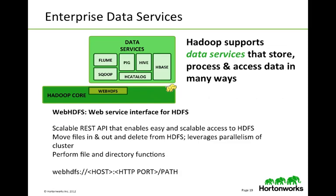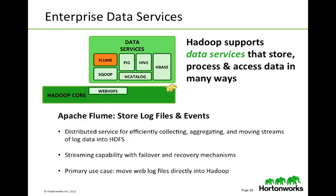In terms of data services to enable the enterprise to store, process, and access data in various ways, we utilize Sqoop, Flume, Pig, Hive, HCatalog, and HBase. WebHDFS is a scalable REST API web service interface that enables easy and scalable access to HDFS. Flume stores log files and events — it's a distributed service for efficiently collecting, aggregating, and moving streams of log data into HDFS. Its streaming capability with failover and recovery mechanisms makes it viable for companies looking for stream-like solutions. The primary use case for Flume is to move web log files directly into Hadoop.